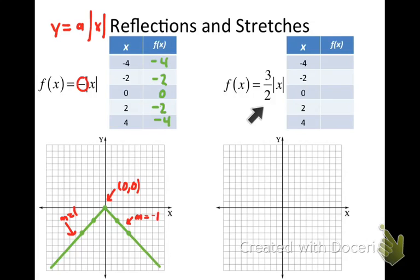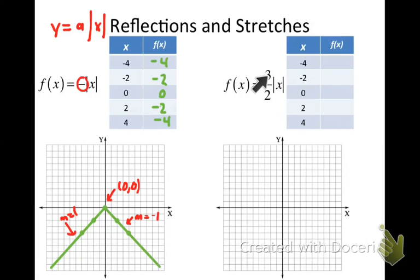What if I change the value of a to positive 3 halves? Since a is positive, the graph will open upward. The absolute value of negative 4 is 4; 4 times 3 halves is 6. The absolute value of negative 2 is 2; 2 times 3 halves is 3. Then we get 0, 3, and 6 respectively. Let's graph that.